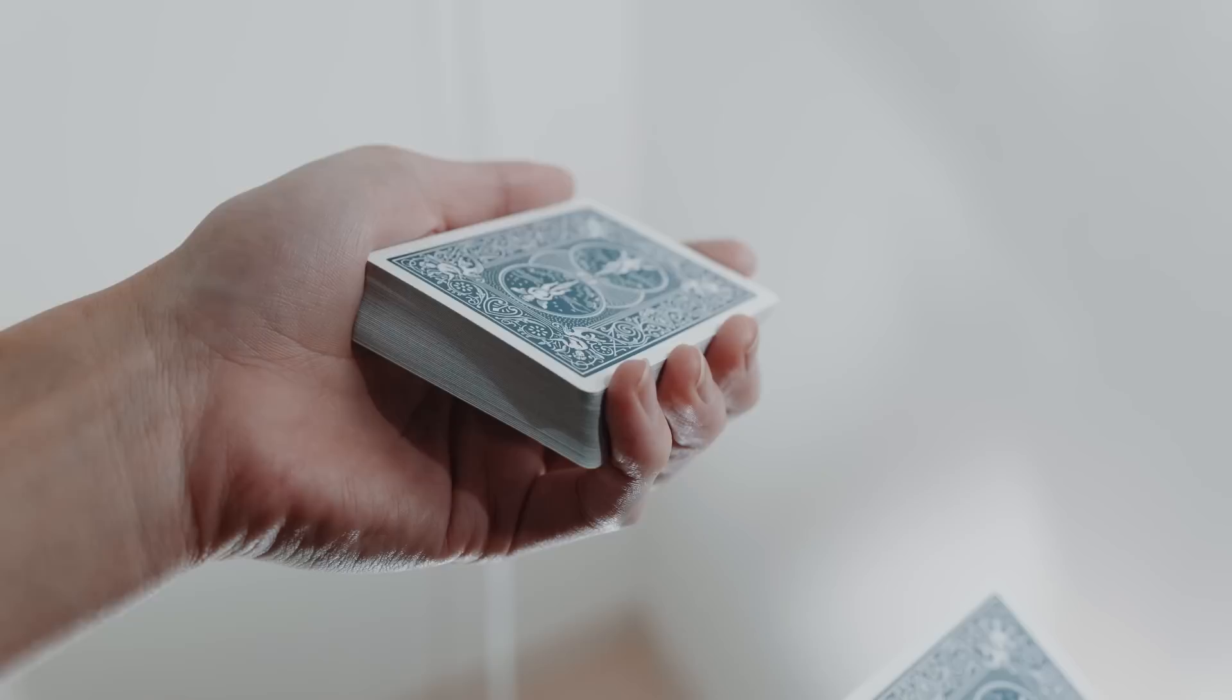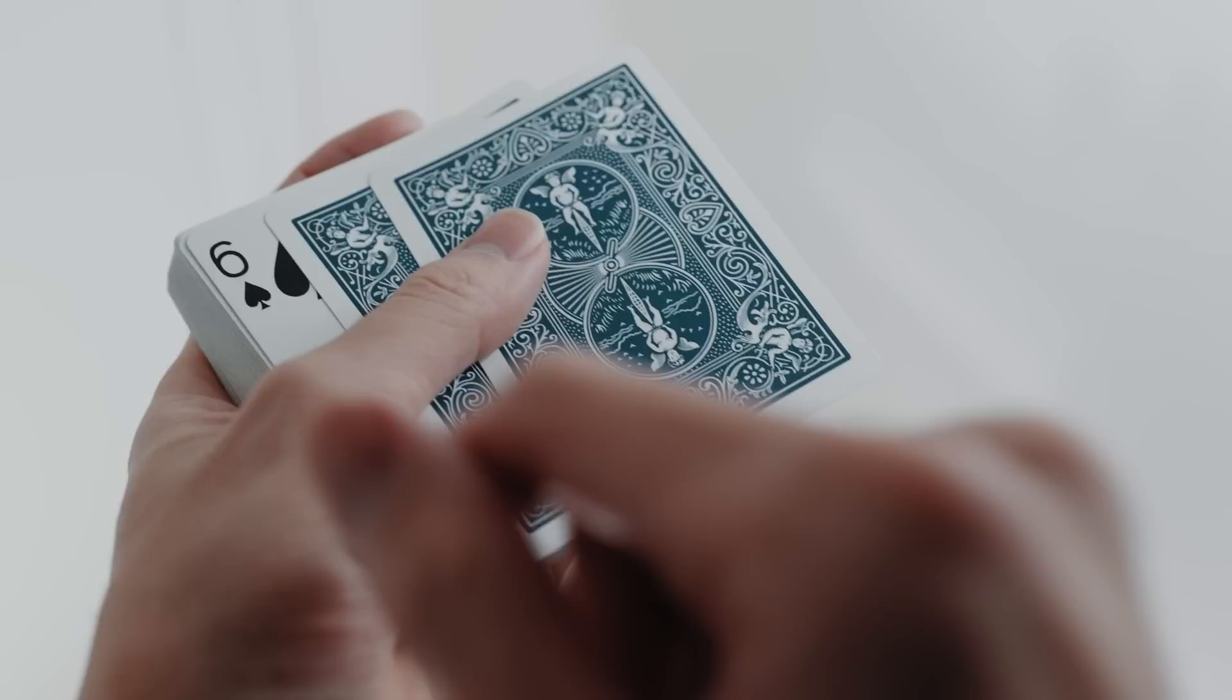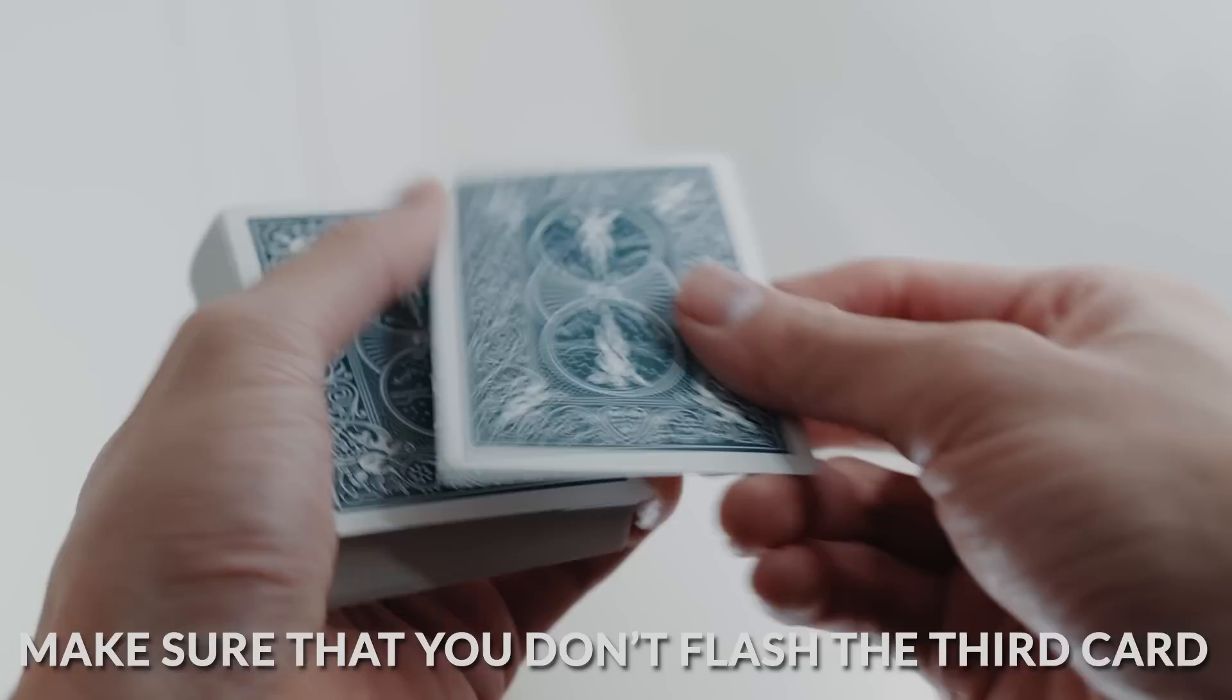So just do this move over and over again until you've got it down and it's pretty smooth. Then take the card you slid to the side and show it to the audience. This will be the card that keeps popping up on top of the deck. You can even have this card signed if needs be.